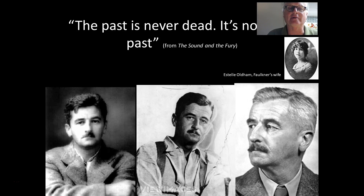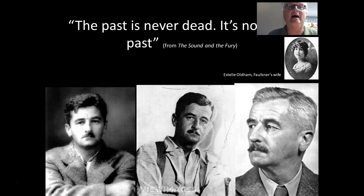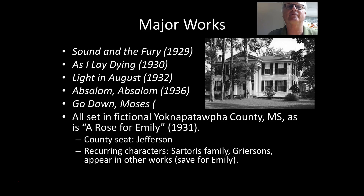Here are some photographs of Faulkner — the young, the middle-aged, and the older Faulkner. Here's a picture of Estelle Oldham, who was Faulkner's wife. He was married to her his whole life; they were the same age and she died pretty much the same year he did. Faulkner is famous for having said something that has really stuck in people's heads: 'The past is never dead. It's not even past.' You're going to see that in 'A Rose for Emily,' which is very much about the past colliding with the present. 'A Rose for Emily' falls relatively early in his work, in 1931.